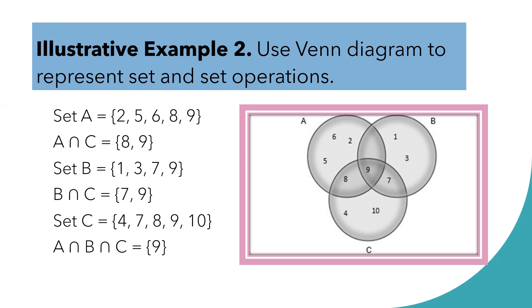Let us have this illustrative example number 2. Use Venn Diagram to represent set and set operations. So, here, our given is the Venn Diagram. So, let us name all the elements under set A. As you can see, in set A, we have 2, 5, 6, 8, and 9. You will write the elements from lowest to the highest.